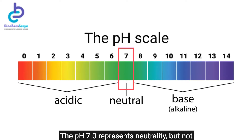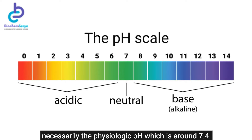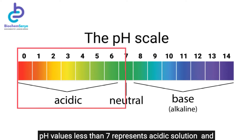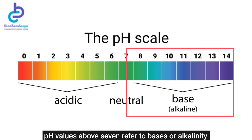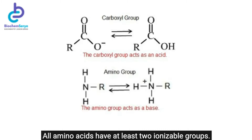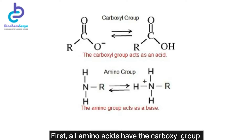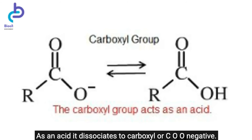pH 7.0 represents neutrality, but not necessarily the physiologic pH, which is around 7.4. pH values less than 7 represent acidic solutions, and pH values above 7 refer to bases or alkalinity. All amino acids have at least two ionizable groups. First, all amino acids have the carboxyl group, which as an acid dissociates to carboxylate or COO-negative.